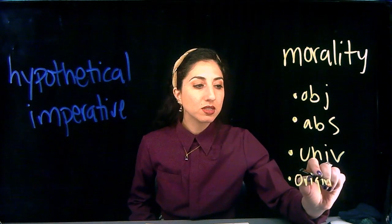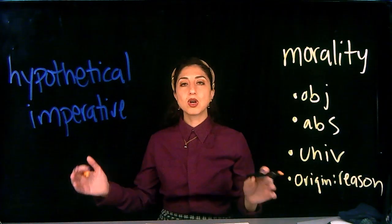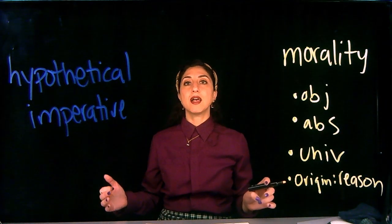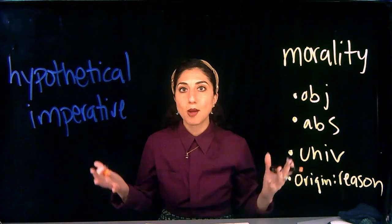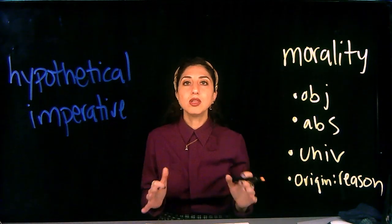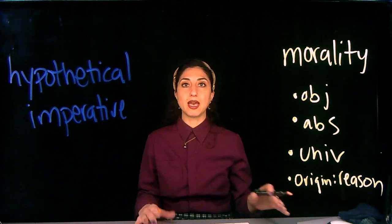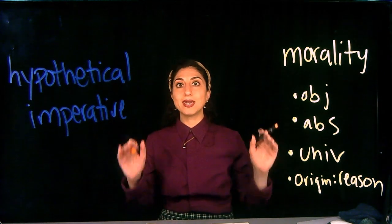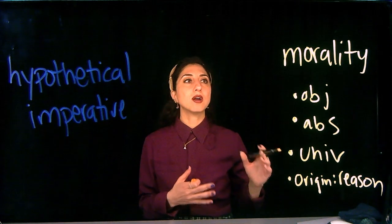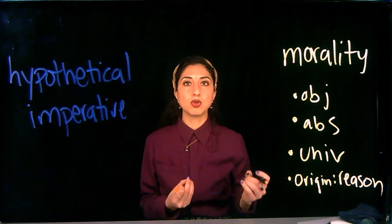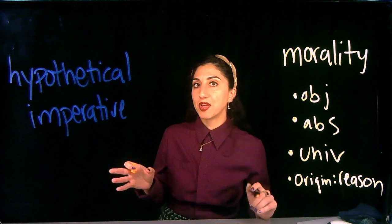The origin of morality is reason and rationality. Immanuel Kant thinks that what is right and wrong, what is your duty, what is your obligation — all of these things apply to everyone equally, everywhere equally, always equally. And your morality comes from the categorical imperative, which is very different from the hypothetical imperative.